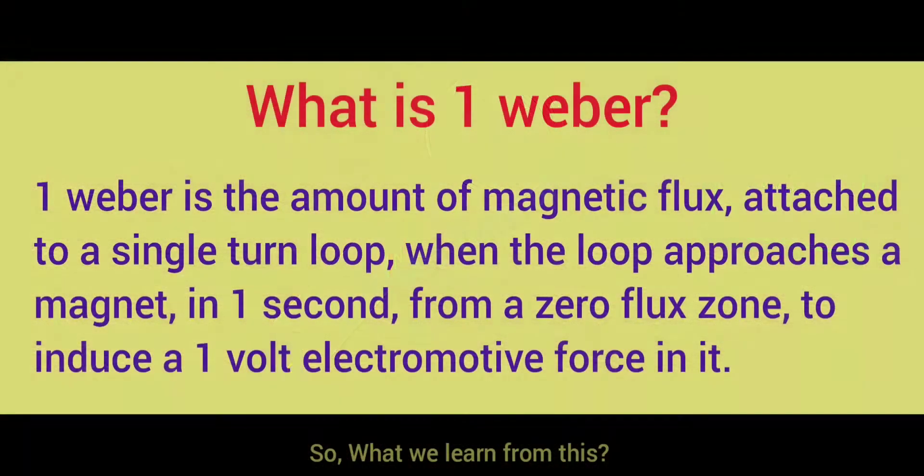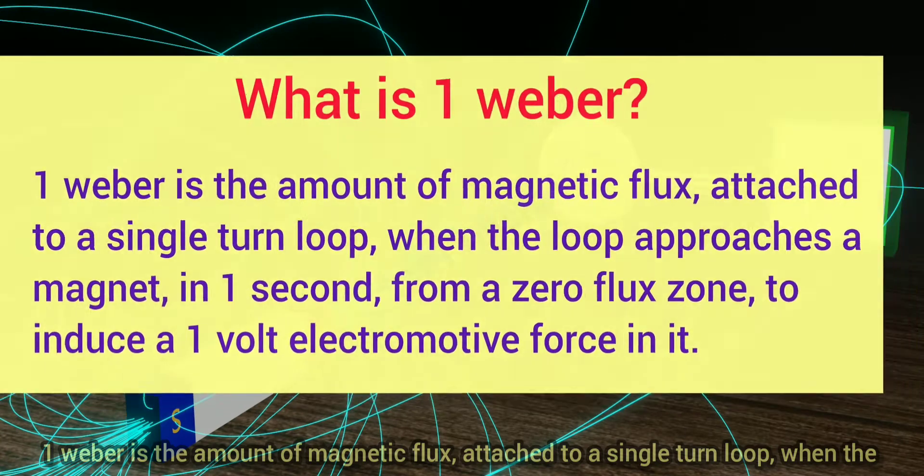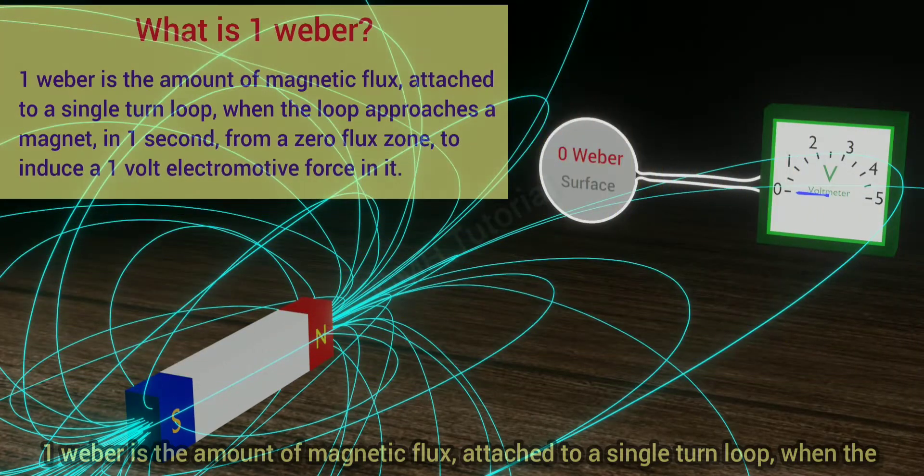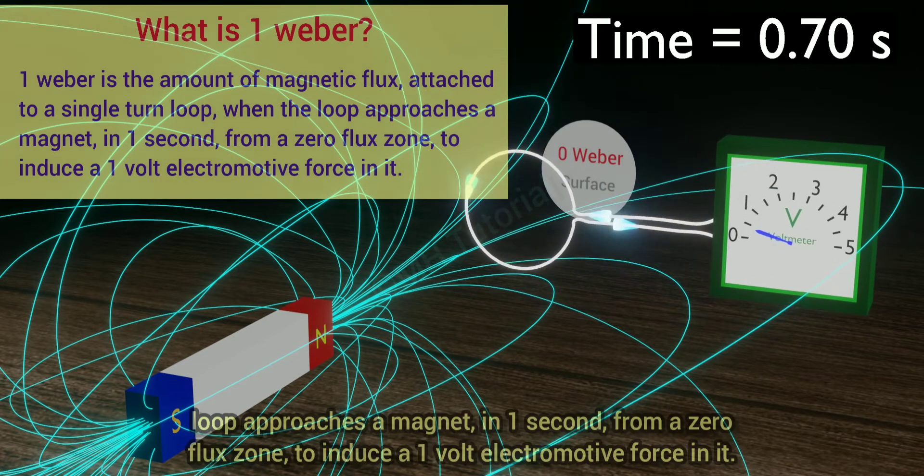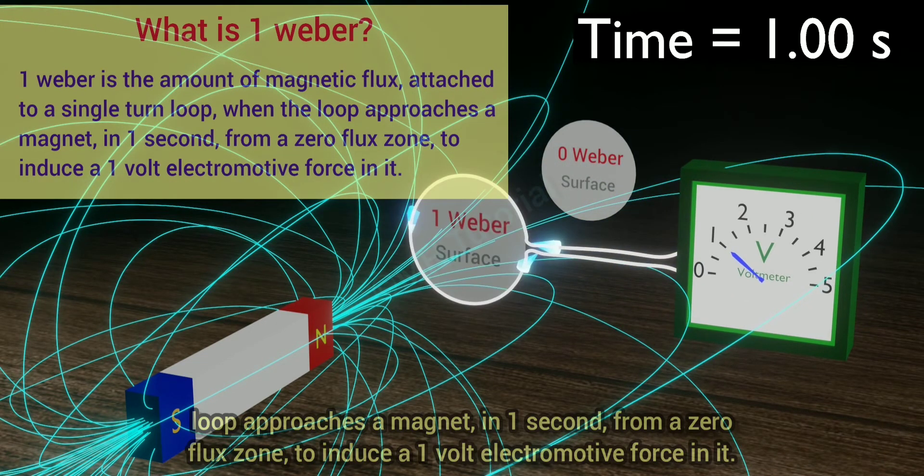So, what we learn from this? One Weber is the amount of magnetic flux attached to a single turn loop when the loop approaches a magnet in one second from a zero flux zone to induce a one volt electromotive force in it.